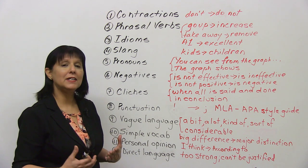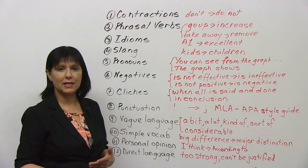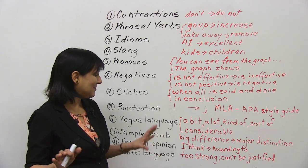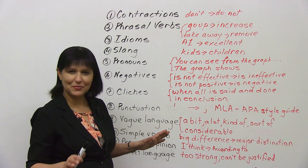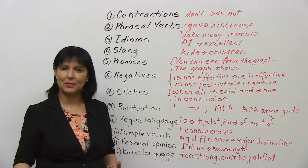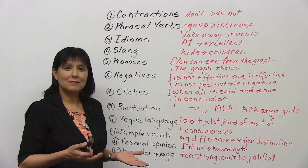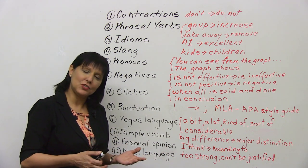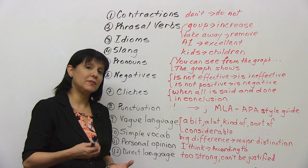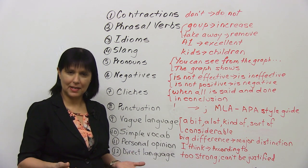Next, avoid vague language. Don't say 'a bit,' 'a lot,' 'kind of,' 'sort of.' The days for using that kind of language are over once you've reached university. Instead, say 'a considerable number' or 'a considerable amount.' Using higher-level language is something you can learn whether or not you've been to university.